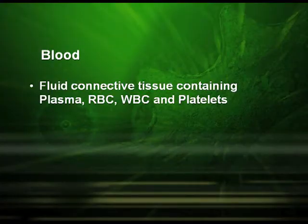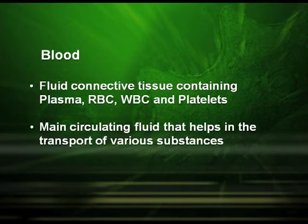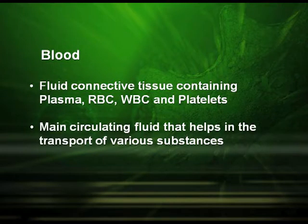Blood is the next type of connective tissue. It is a fluid connective tissue consisting of plasma, red blood cells (RBC), white blood cells (WBC), and platelets. It is the main circulating fluid that helps in the transport of various substances.